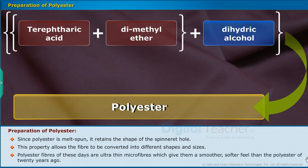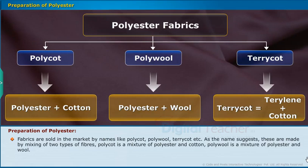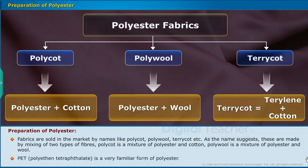Polyester fibers today are ultra-thin microfibers, which give them a smoother, softer feel than the polyester of 20 years ago. Fabrics are sold by names like polycot, polywool, terricot, etc. As the names suggest, these are made by mixing two types of fibers: polycot is a mixture of polyester and cotton, polywool is a mixture of polyester and wool. Terylene is often mixed with cotton to make terricot and with wool to give terrywool. Polyethylene terephthalate (PET) is a very familiar form of polyester.